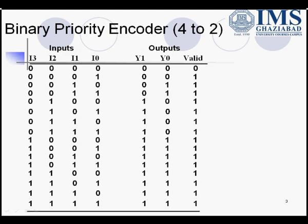In the first combination, 0, 0, 0, 0 — all the inputs are active low. That means whatever output we are getting is invalid. So y1 and y0 would be 0, 0, and valid is also 0. In all other cases, sequence number 1 to sequence number 15, there is at least one input that is actively high, so our output would be valid. So in entries 1 to 15, all the valid entries are 1.